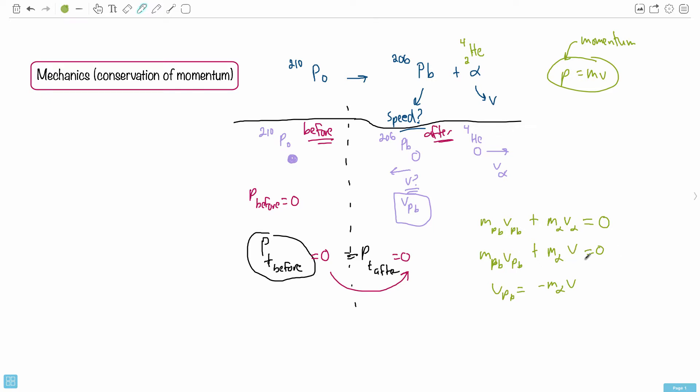But I've still got the mass hanging out here. So I want to get rid of that mass. So V_Pb equals negative M_alpha times V over the mass of lead. Now all I can do is put in the values and I get my answer.